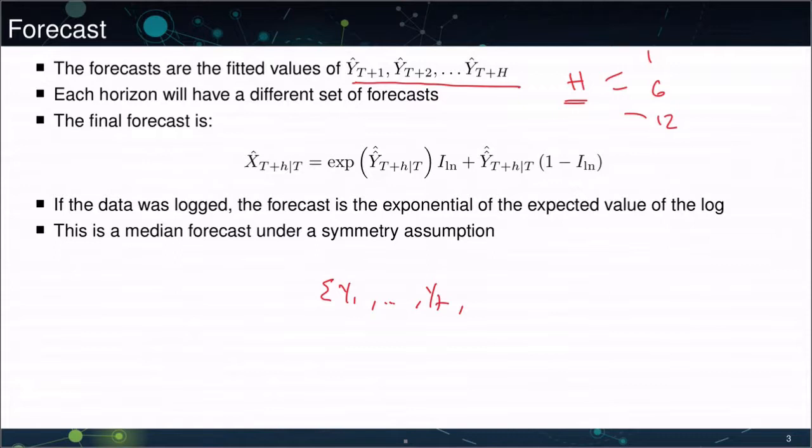So you'd have Y1 through Yt, and then you'd have Yt plus 1 hat. And that's what you would use for H equals 1. For H equals 6, you would have Y1 through Yt, and then Yt plus 1 through Yt plus 6, and so on. So that's what you'd get for a different horizon. If you had another horizon, you would simply use a different set of augmentation variables.